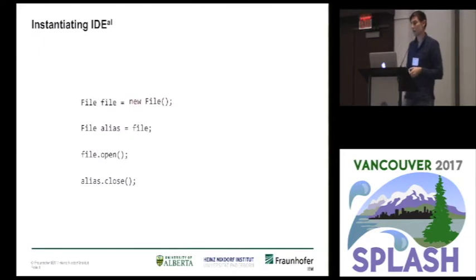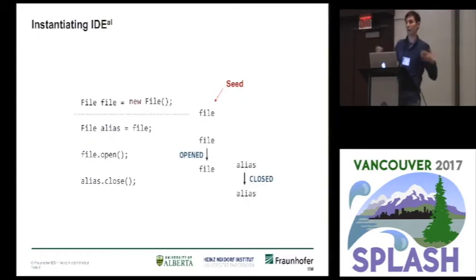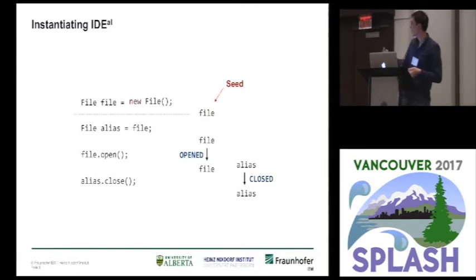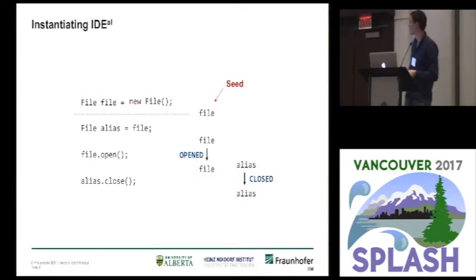To instantiate IDEAL, you start by propagating seeds — you supply a seed which is a variable at a statement, or an access path at a statement. You also supply the environment or edge function, which tells how the value flows from one statement to the next. For example, at the open call, if the variable file passes through the call to open, it will turn into an open state. Similarly, at the alias.close call, it will be switched to a closed state.